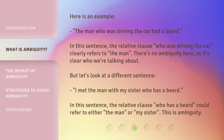But let's look at a different sentence: 'I met the man with my sister who has a beard.' In this sentence, the relative clause 'who has a beard' could refer to either the man or my sister. This is ambiguity.